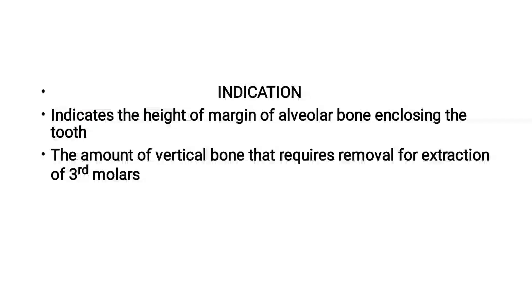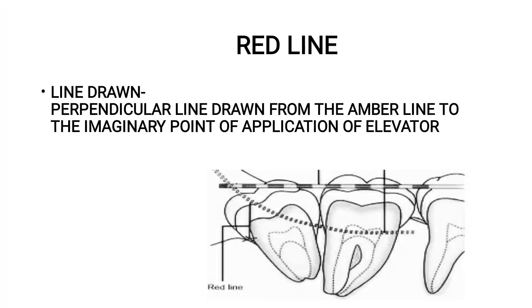Now, what is the red line? The red line is drawn perpendicular from the amber line to the imaginary point of application of the elevator. You can see over this diagram — this is the red line.